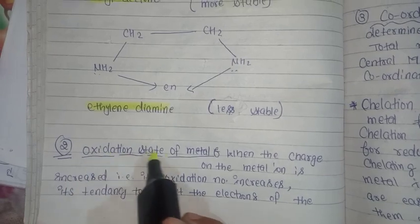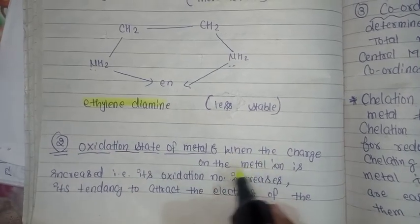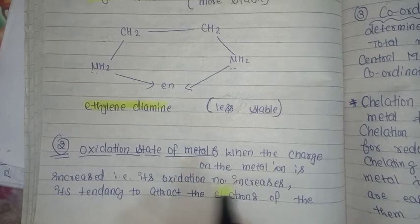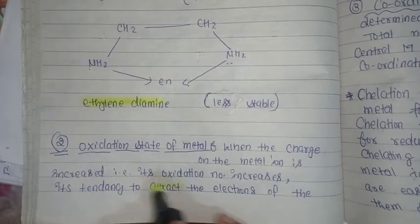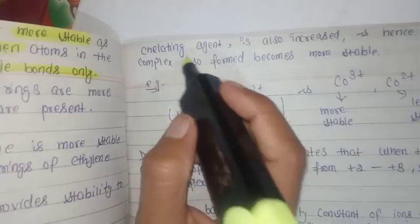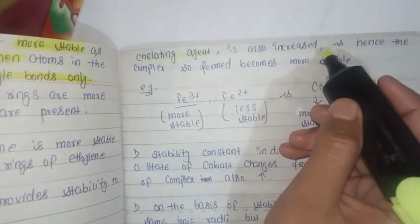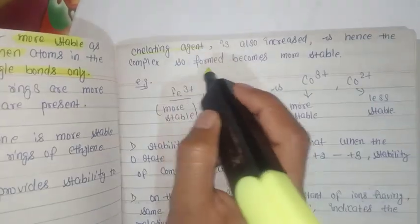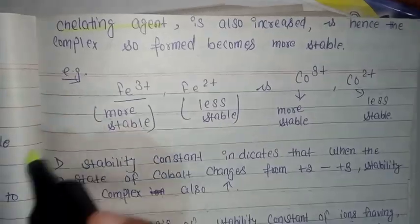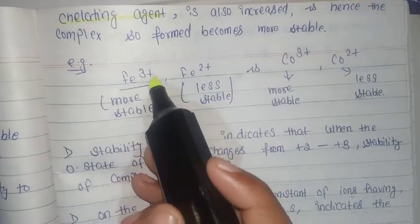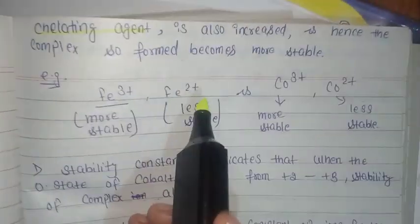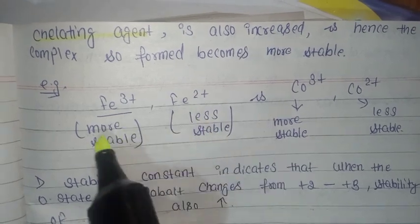Second is oxidation state of metal. When the charge on metal ion is increased, that is the oxidation number increases, its tendency to attract the electrons or chelating agent also increases and hence the complex so formed becomes more stable.